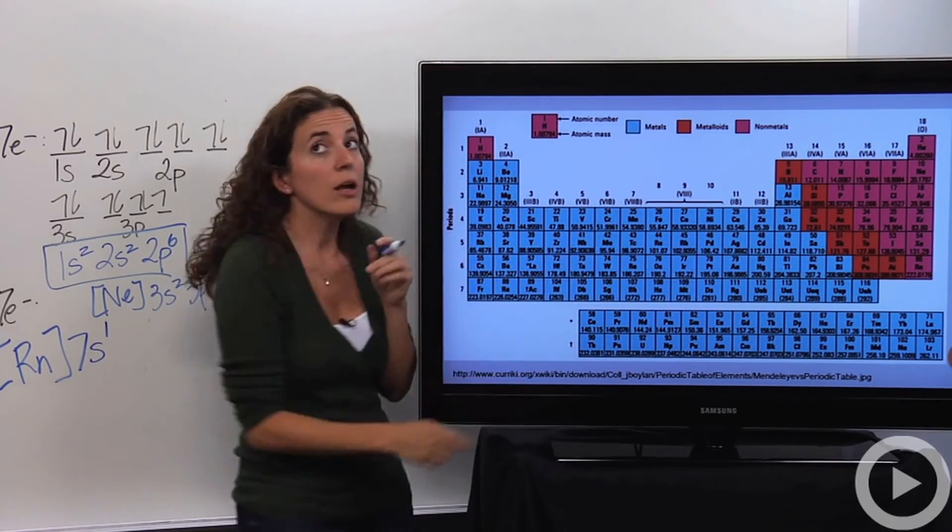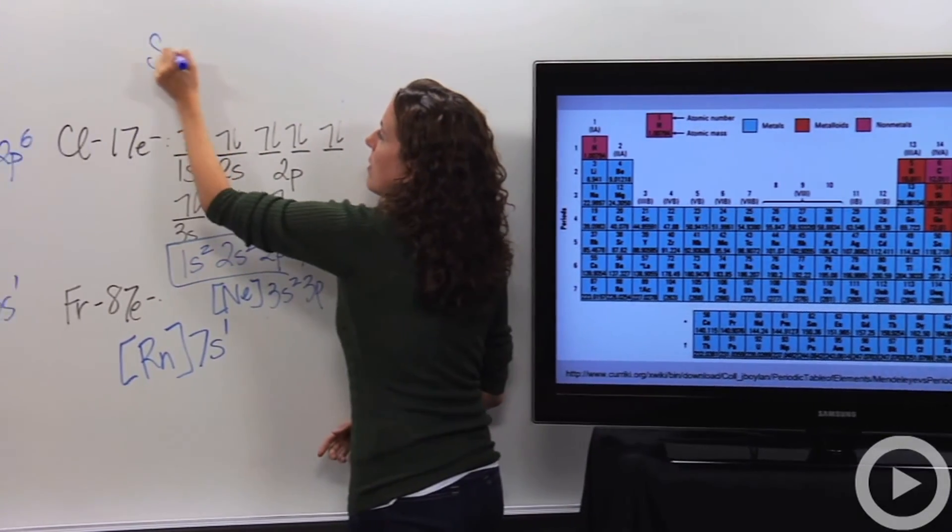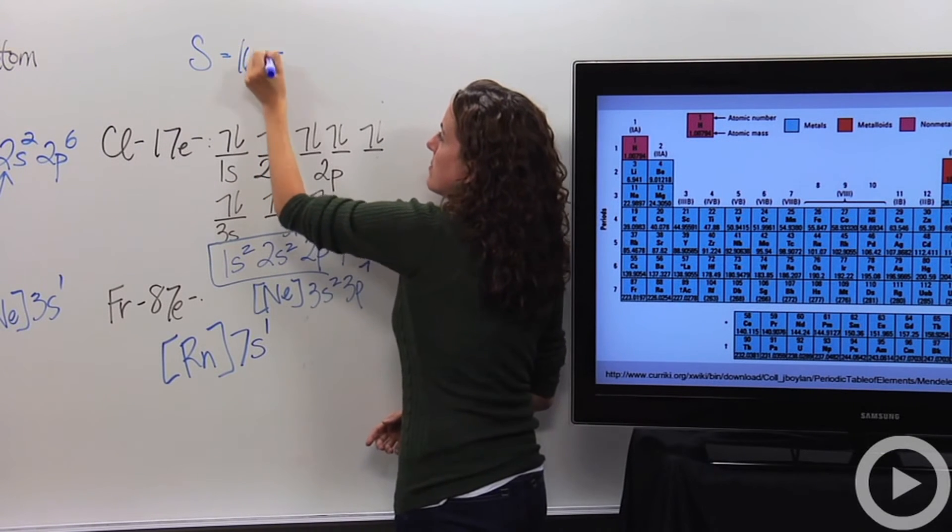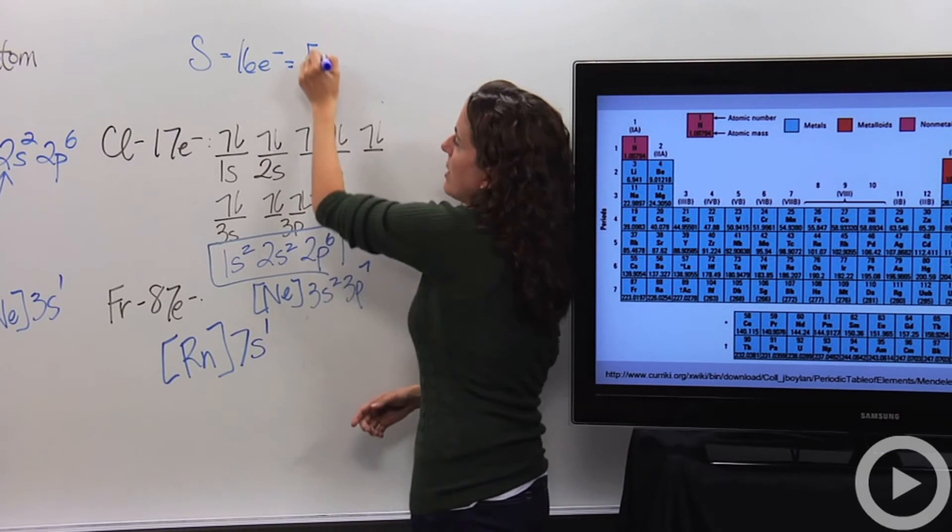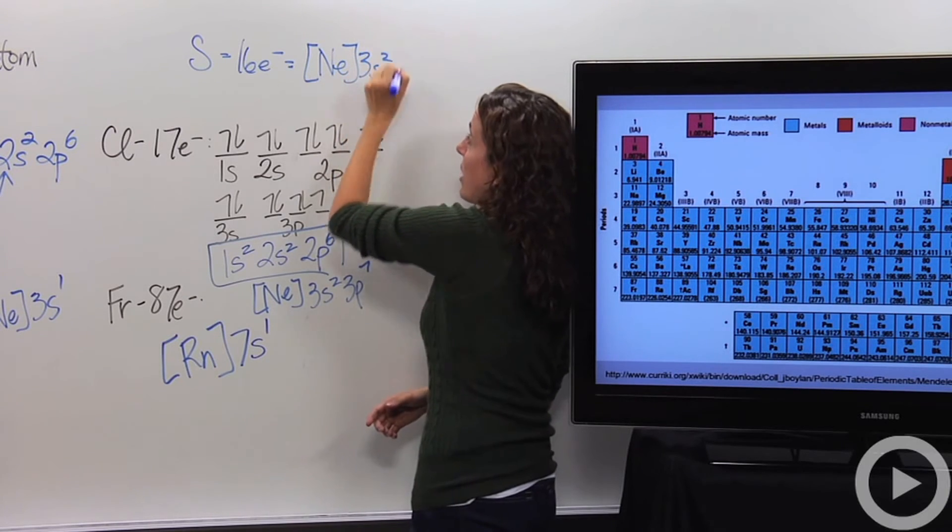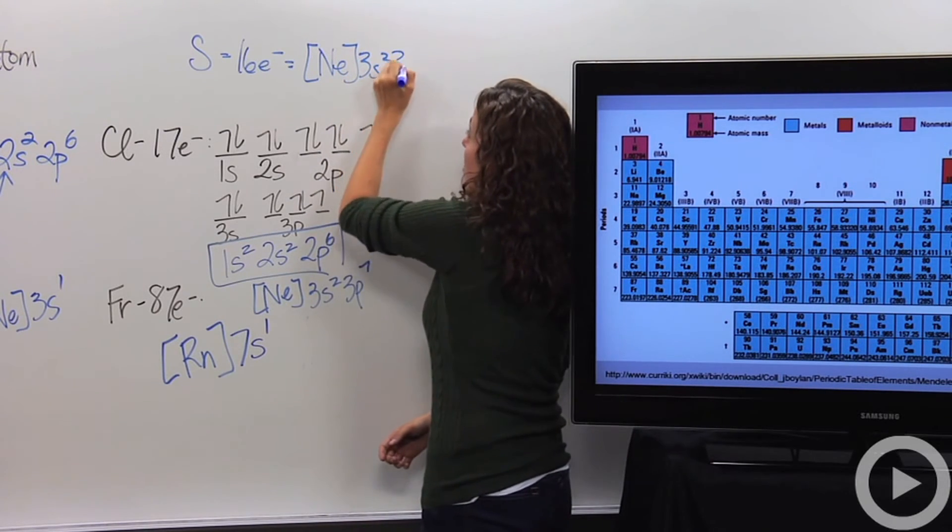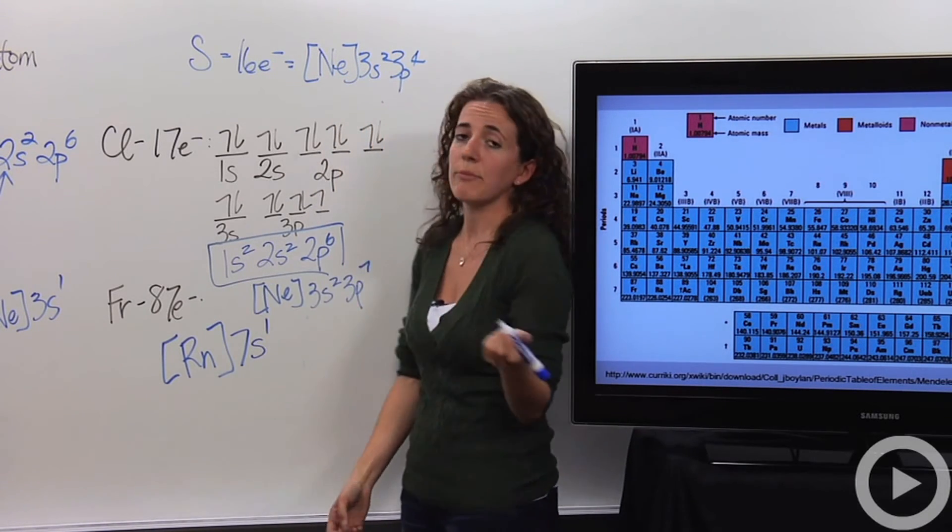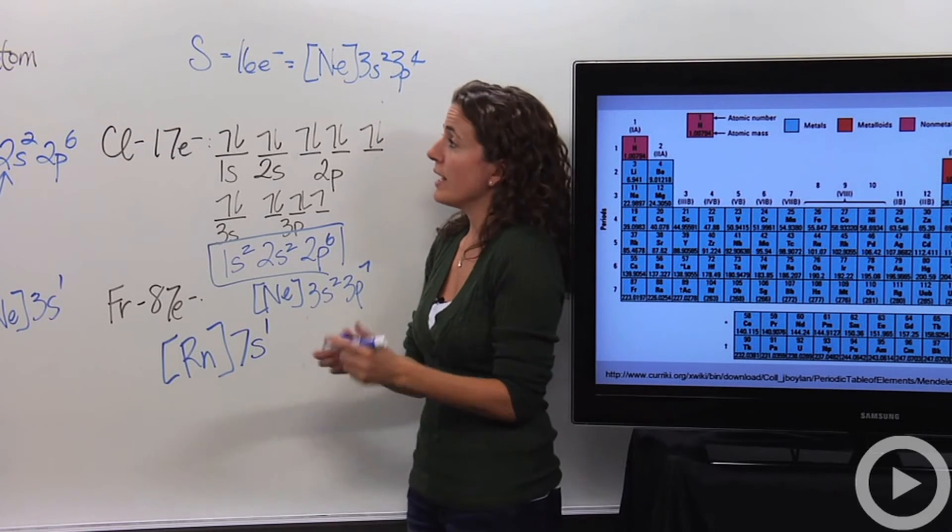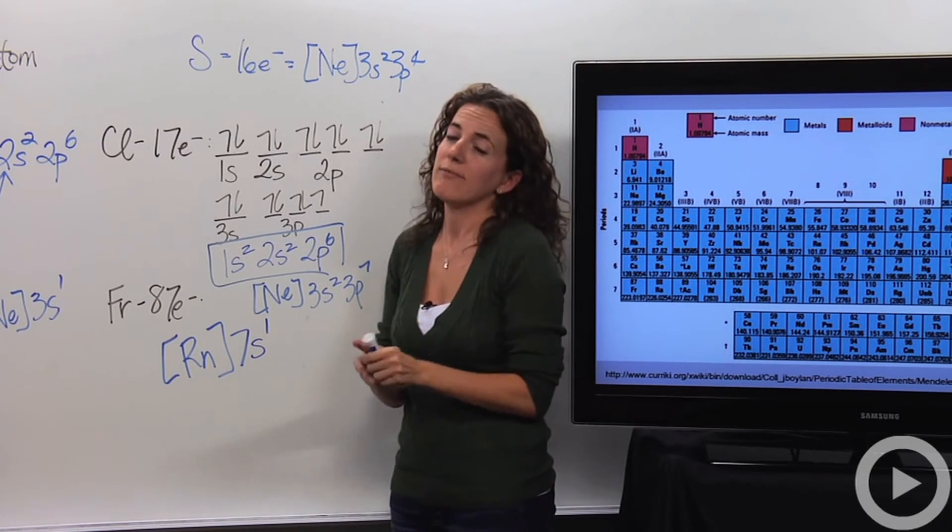So sulfur, if we were to write it, 16 electrons, it would be, what do we say, neon? 3s2. We don't forget, we have to denote that. 3p4. Pretty much. Easy enough. So that is electron configuration and noble gas configuration.